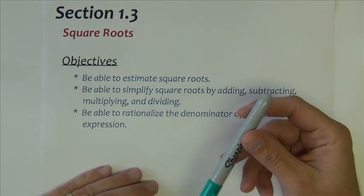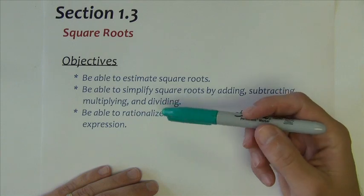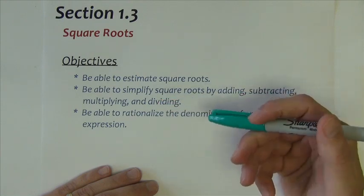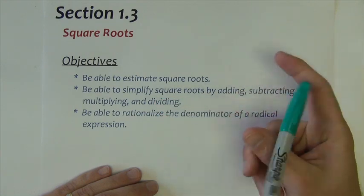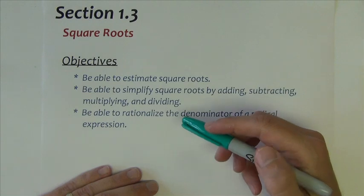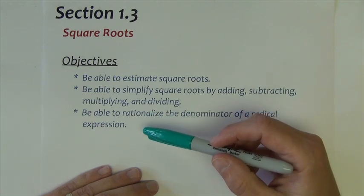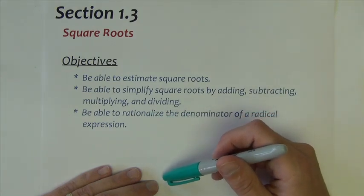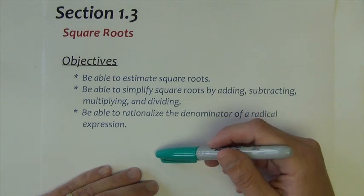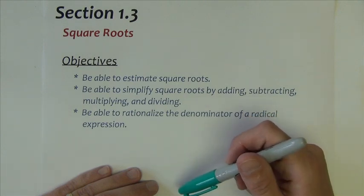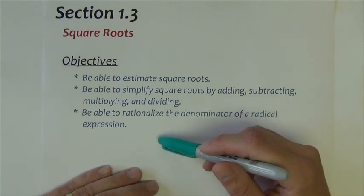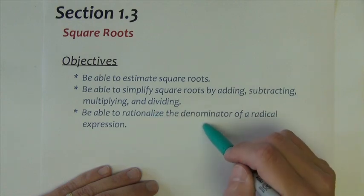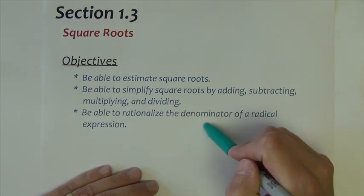Section 1.3 is titled Square Roots. What we're going to be doing in this section, we'll go over how to estimate square roots, but then mainly we'll spend the bulk of our time with simplifying square roots. How do we simplify them, how do we then do the operations with square roots, adding, subtracting, multiplying, and then how do we divide square roots by rationalizing the denominator of a radical expression.